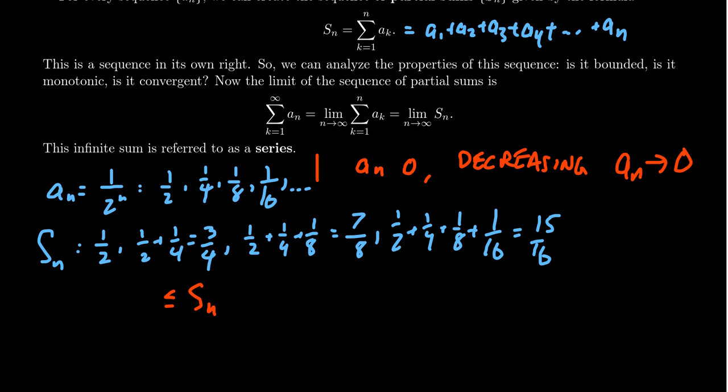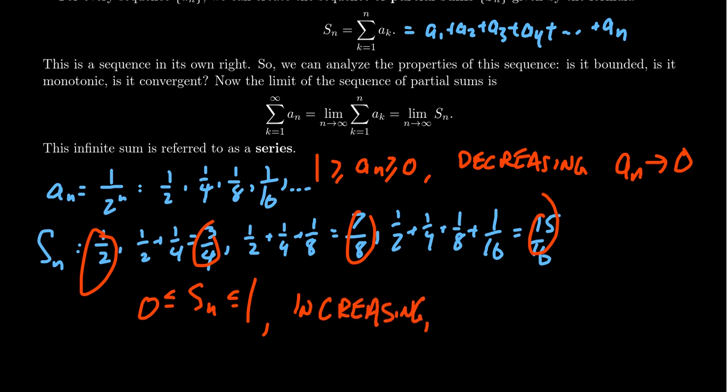It sits between 1 and 0. So our sequence s_n will sit between 1 and 0. That part's the same. But notice this sequence, as we go from 1 half to 3 fourths to 7 eighths to 15 sixteenths, this sequence is actually increasing. And as it's a bounded, increasing sequence, it's convergent by the monotone convergence theorem. But in this situation, s_n is going to converge towards the number 1.